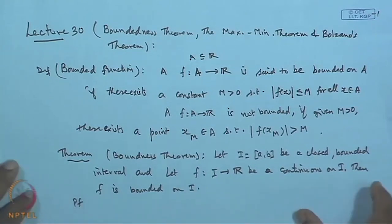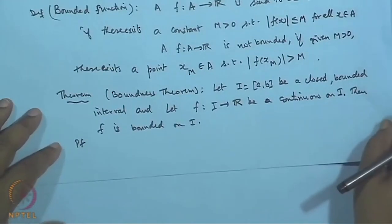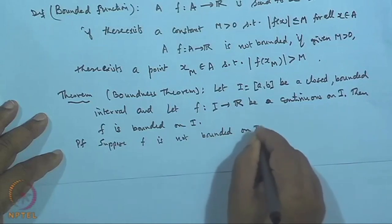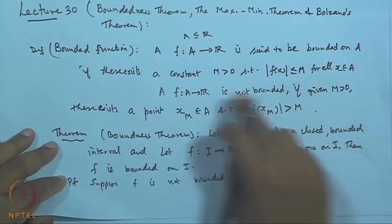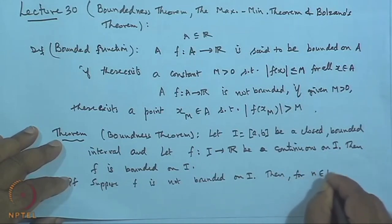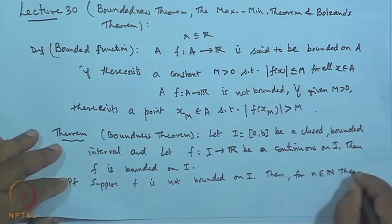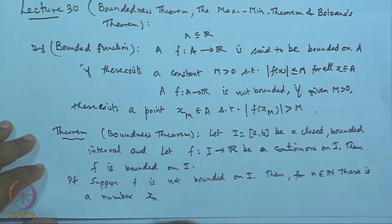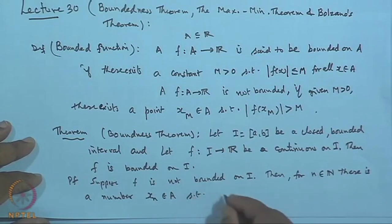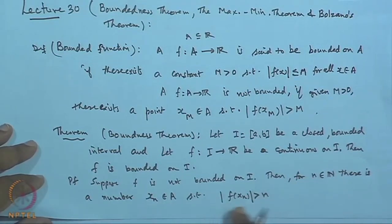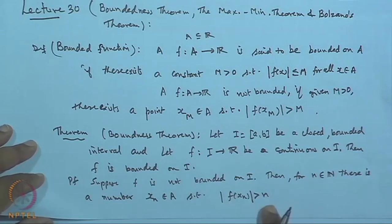We will prove this by contradiction. Suppose f is not bounded on I. By definition, for any n belonging to the natural numbers, there is a number x_n in I such that |f(x_n)| > n. So corresponding to 1, we get a point x_1 with f(x_1) > 1; corresponding to 2, we get f(x_2) > 2; and so on. We get a sequence of points in I satisfying f(x_n) > n.